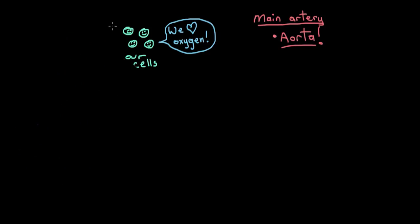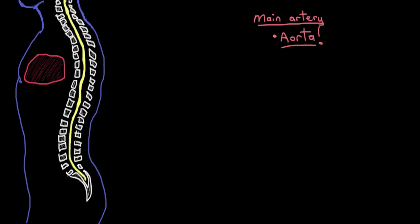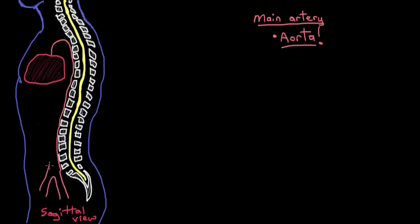Let's look at where exactly the aorta is. This is a side view of a person — a sagittal view — and I purposely chose this view to easily show the different regions of the aorta. The aorta stems off the top of the heart, arches up to about the upper chest area, and then back downward again. It heads down behind the heart, sitting right in front of the spine — the vertebrae — all the way down to just below the belly button, where it splits into two other arteries, the iliac arteries.